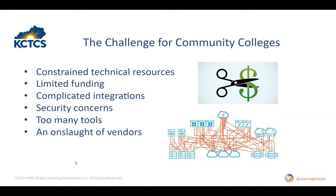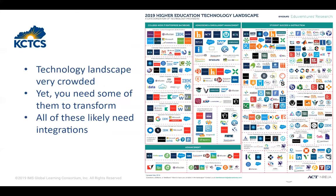Digital learning environments are a team sport, and it's one you really need to win. This is a representation of the 2019 higher education technology landscape put together by EduVentures Research, which you can download from their website. It includes areas of advancement, enterprise, IT backbone, student success, and instruction. For community and technical colleges, I believe it's important to partner with companies versus having a strictly contractual nature. When there's skin in the game for both of you, there's much better collaboration and give and take. When you've got partnerships, they are much more willing to come to the table with these standard integrations.